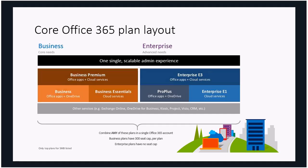Not only can you buy Office 365 as a suite, you can also purchase individual items — just Exchange Online, OneDrive for Business, Project, or Visio. You can mix and match those licenses within a single tenant: some users on Business, some on Business Premium, others on E3, and maybe kiosk users on Exchange Online only. One of the important differentiations with Office 365 is the ability to mix and match all the SKUs and licenses within that environment.